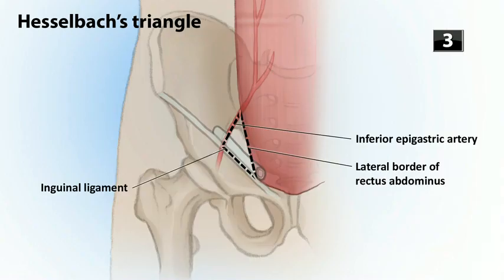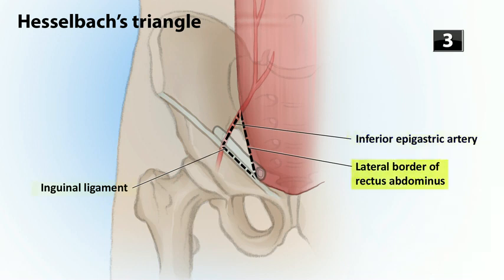Imagine that triangle pointing down toward the groin. The top is the inferior epigastric artery, the medial border is the rectus abdominis muscle, and the lateral border is the inguinal ligament. That's it for the warm-up.